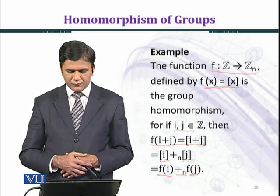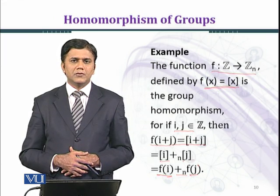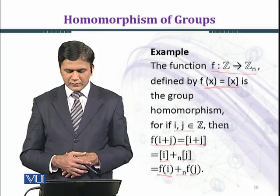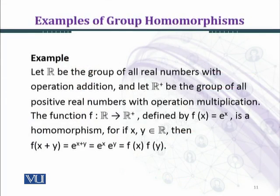So we have proved the homomorphism property. In this case the map f is a homomorphism. Let's consider another example. Let ℝ be the group of all real numbers with operation addition, and ℝ⁺ be the group of all positive real numbers with operation multiplication.